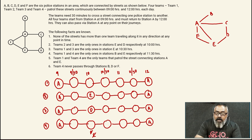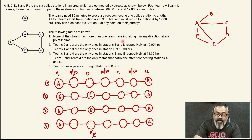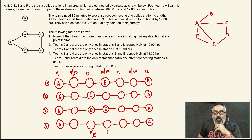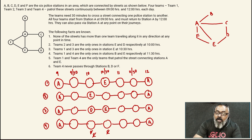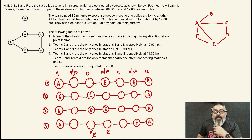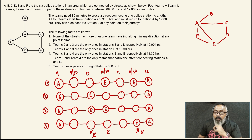The next clue says teams 1 and 3 are the only ones at station E at 10:30 hours. So at 10:30, team 1 is in E and team 3 is in E, and nobody else. Looking at the next clue: teams 1 and 4 are the only ones at stations B and E respectively at 11:30 hours. So at 11:30 we capture team 1 at B and team 4 at E — no more B and no more E entries possible at that time.